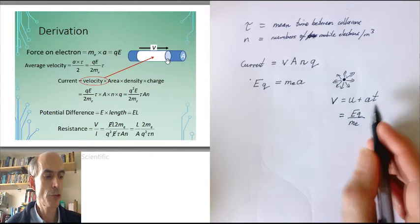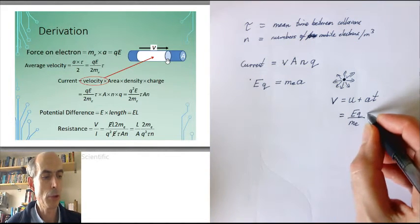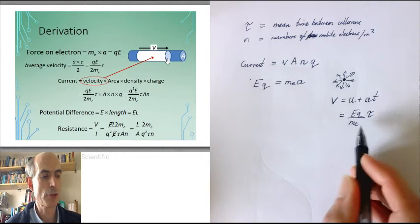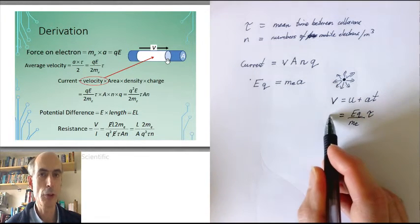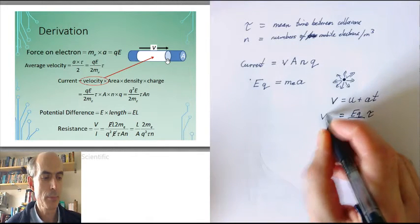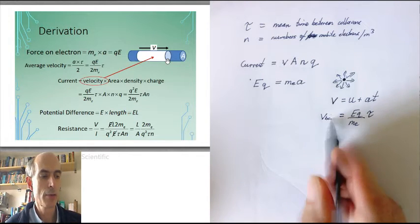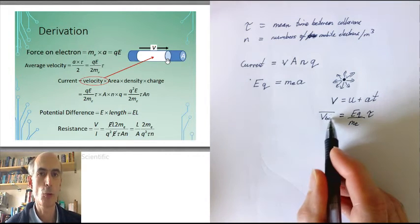And the time. Well, if the time is the mean time between collisions, then if I multiply the acceleration by the mean time between collisions, that will be the mean velocity just before a collision. I'll call it v_BC. The average velocity just before a collision.